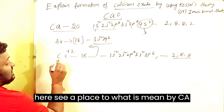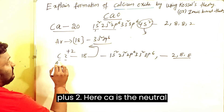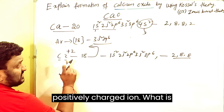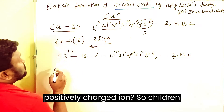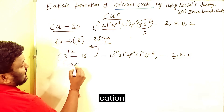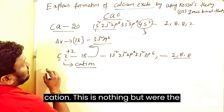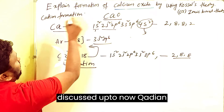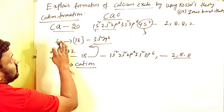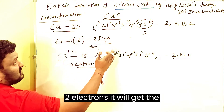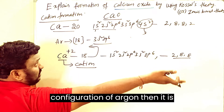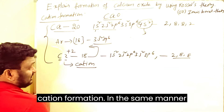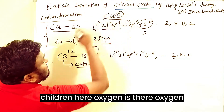Ca is the neutral atom and Ca²⁺ is a positively charged ion. A positively charged ion is called a cation. So when calcium loses 2 electrons it gains the configuration of argon and becomes stable. This completes the cation formation of calcium.